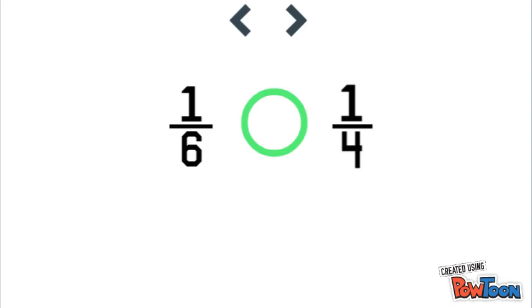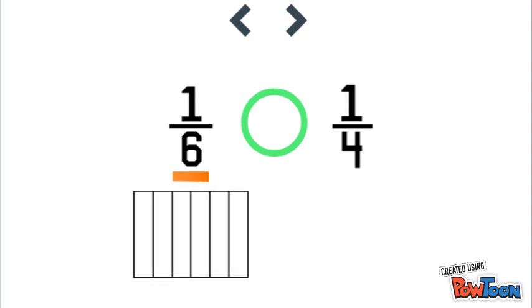Alright, let's try another one. Here we have one sixth and one fourth. One sixth has a denominator of six, so our model needs to be split into six. And the numerator is one, so we'll shade in one of those six.